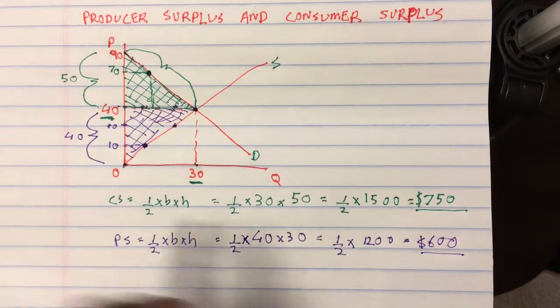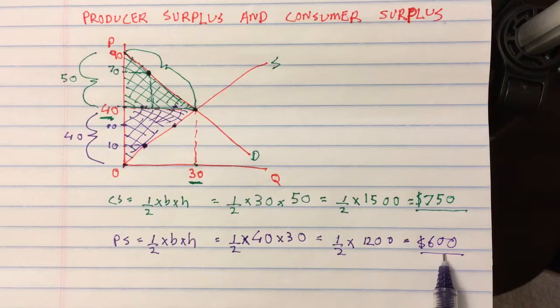So my consumer surplus is $750. My producer surplus is $600.